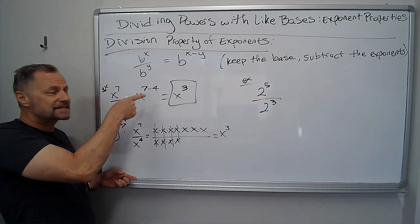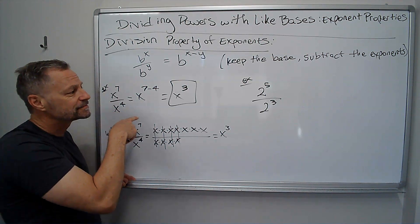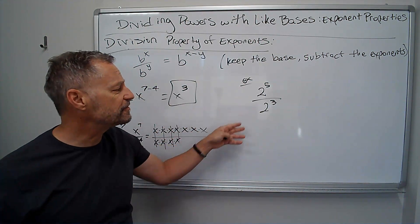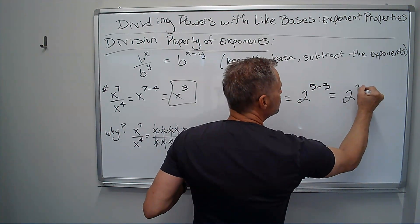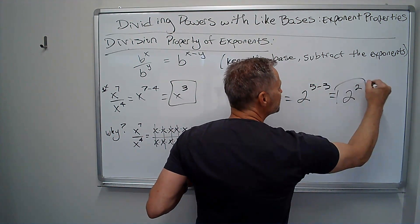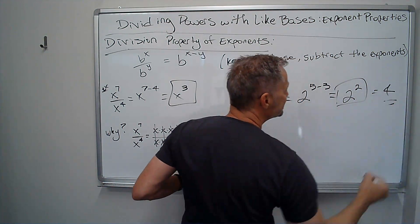So the shortcut to this is just subtracting the exponents. So similarly over here, 2 to the 5th over 2 to the 3rd, keep the base, subtract the exponents, I get 2 squared. That's my answer. If we were to call that 4, fantastic.